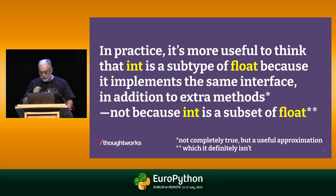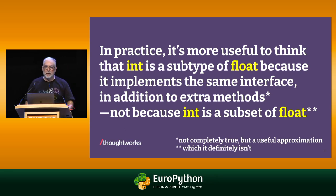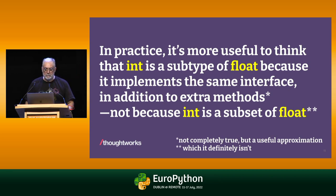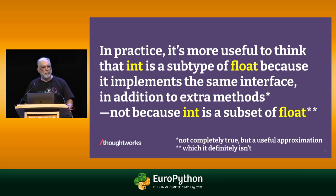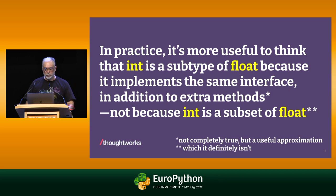I put a couple of asterisks here because just yesterday I discovered there are a few float methods that int does not implement — they're kind of bizarre. One of them generates a hexadecimal representation of the float. But as a good approximation, we can think of subtypes, and in general that's true: subtypes implement the entire interface of the supertype in addition to more methods.